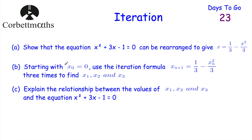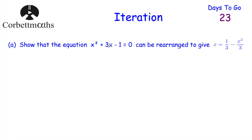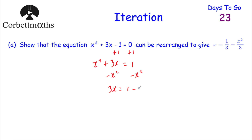Our next question has three parts. Part A asks us to show that x² + 3x - 1 = 0 can be rearranged to give x = 1/3 - x²/3. I notice the thirds, so we've divided by 3. First, add 1 to both sides to get x² + 3x = 1. Then subtract x² from both sides to get 3x = 1 - x². Finally, divide both sides by 3 to get x = 1/3 - x²/3. And if you got that, well done.